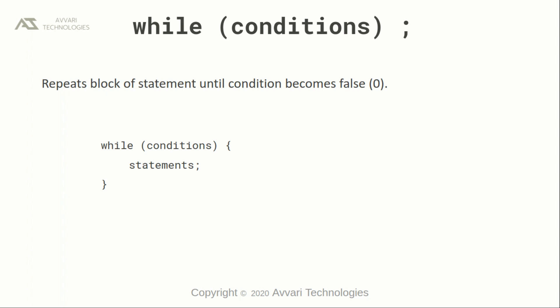While statements repeat a block of statements until the condition becomes false. While can accept either logical true or logical false. The while statement will execute if the condition becomes true. Once the condition becomes false, it will come out of the loop. The syntax to write while loops is: while, within the parentheses, write the conditions. If the condition turns out to be true, the statements will be executed. If the condition is false, exit the loop.